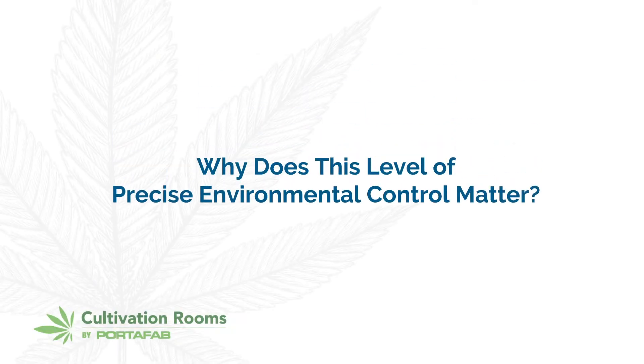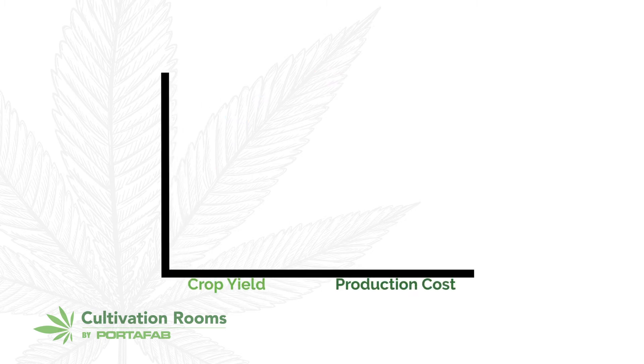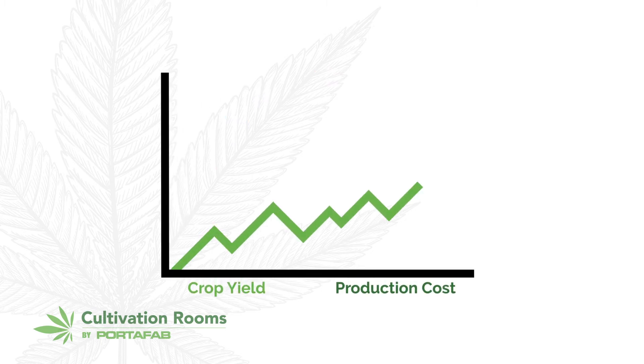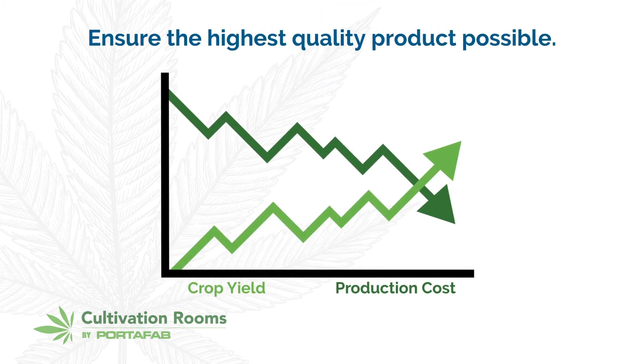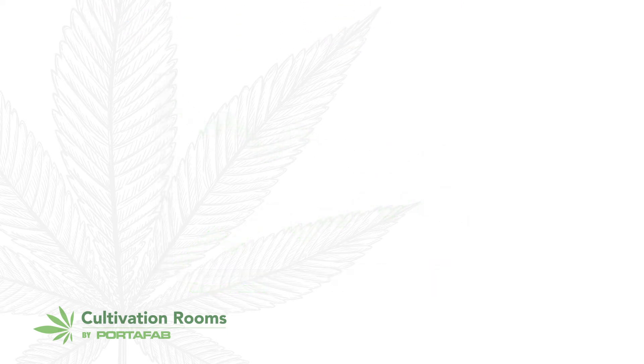Why does this level of precise environmental control matter? It's simple: to increase crop yield, decrease production cost, and ensure the highest quality product possible.